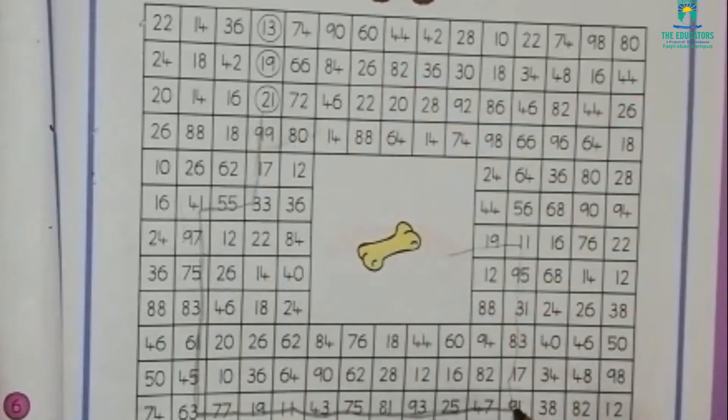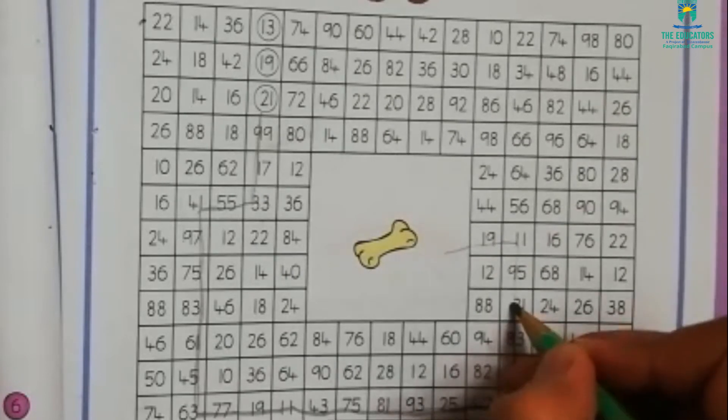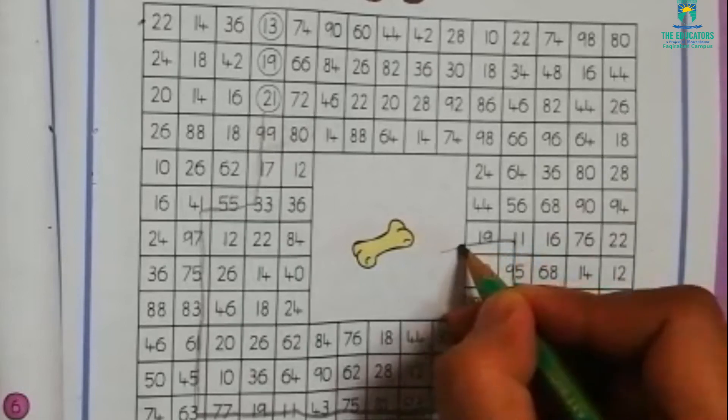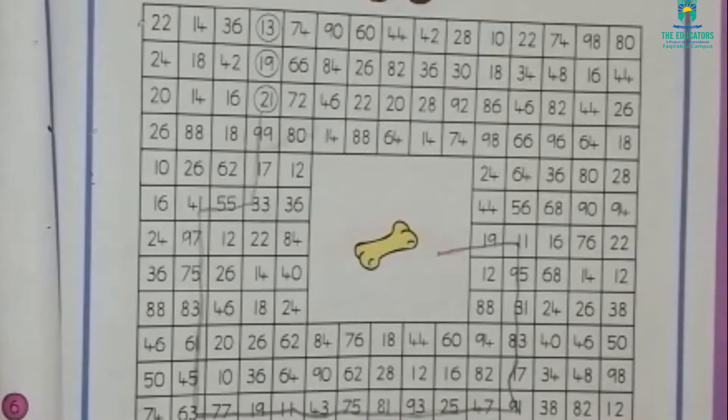Then 91, 81, 27, then 93, 91, and 19. Then the dog found the bone.